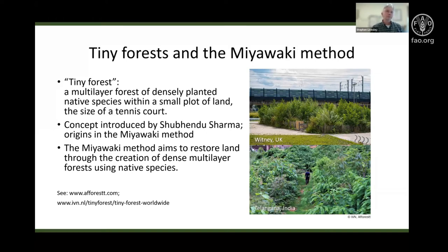Densely planted native species within a small plot of land the size of a tennis court. The concept was introduced by Indian engineer Shubhendu Sharma, who adapted and utilised the Miyawaki method to forest landscapes by creating tiny, fast-growing forests. The Miyawaki method is a forest reconstruction system developed by Japanese botanist Akira Miyawaki, aiming to restore land through the creation of dense, multi-layer forests using native species that form the potential natural vegetation, or PNV.